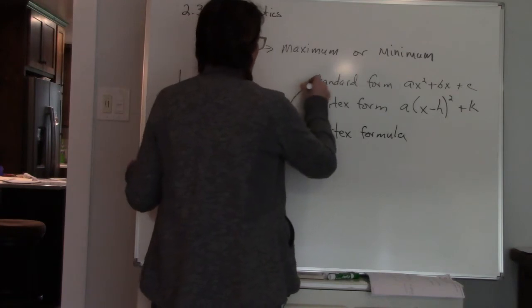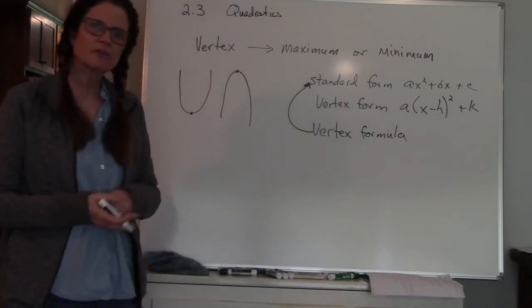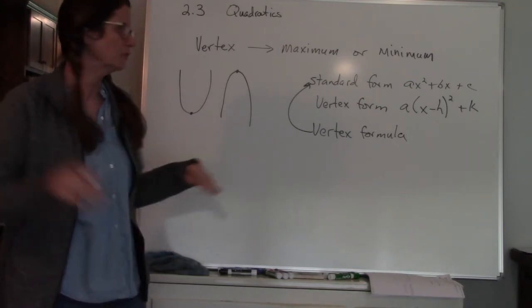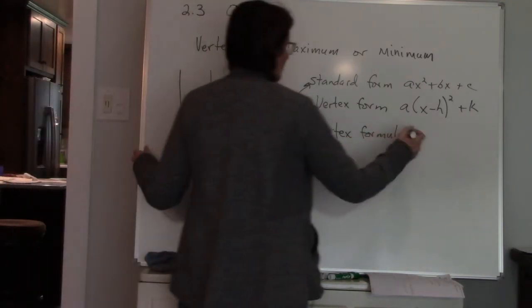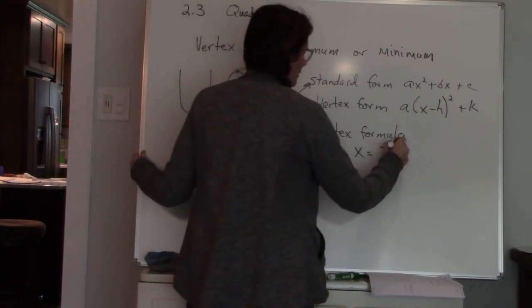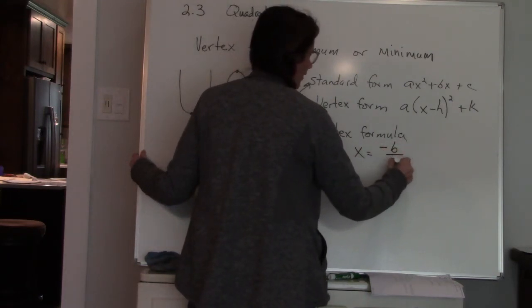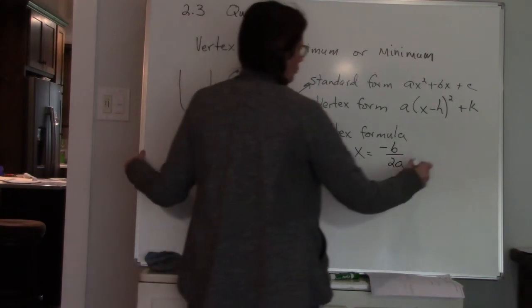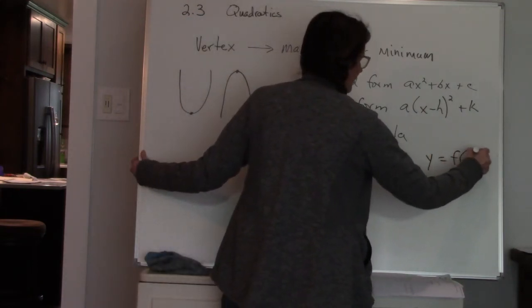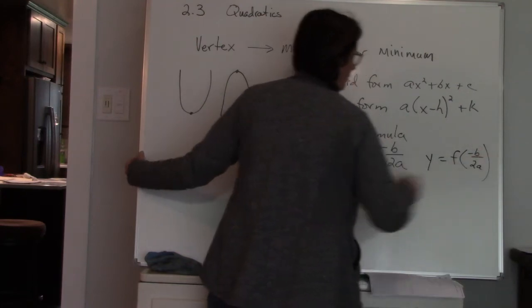The vertex formula you use when you have a standard form quadratic. So the vertex formula—you find your x value of the vertex by using negative b divided by 2a. You find the y value when you plug the x value back in.